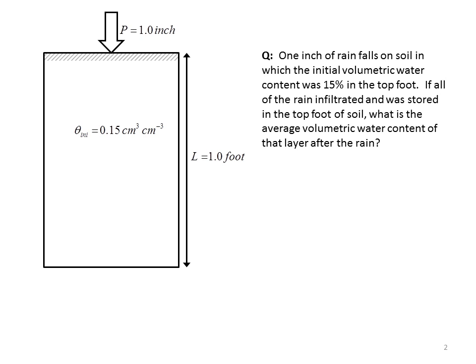Our first problem here involves calculating the soil water content that would occur after a given rainfall if all of that rain infiltrates into the soil. In this case you can see that we have a soil profile and the length of that profile is one foot. One foot in thickness is indicated here.